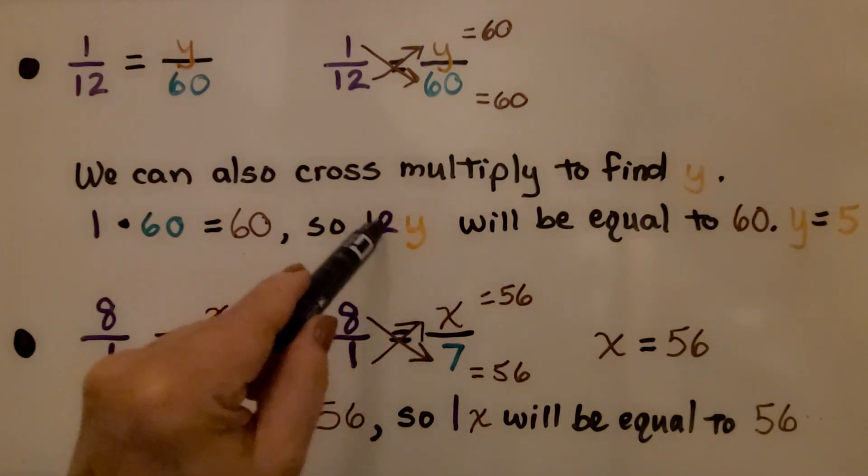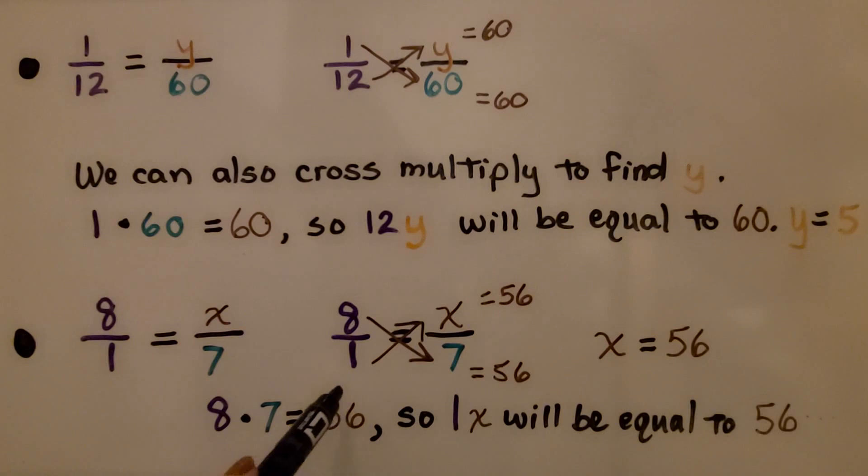Remember, when the coefficient and the variable are next to each other, that means multiplication. So we have 1 times some number is 56. Well, x must be equal to 56.